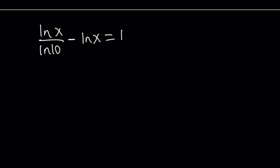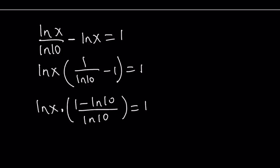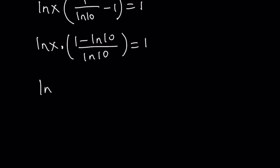So now we're going to go ahead and take out an ln x here. Since we can factor this, take out ln x, you're going to get 1 over ln 10 minus 1 equals 1. We can go ahead and make a common denominator: 1 minus ln 10 over ln 10. And now we can go ahead and divide both sides by that quantity, or multiply by the reciprocal, to get ln x by itself. So from here ln x can be written as ln 10 over 1 minus ln 10, which is the reciprocal of this expression.